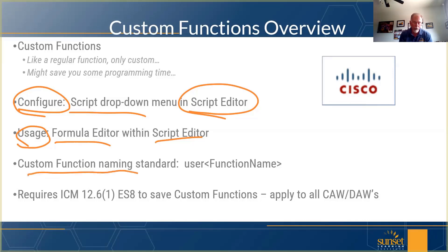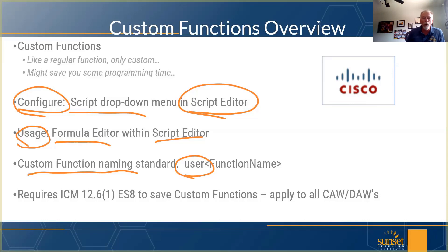Custom function naming standard — similar to ECC variables or user variables in ICM. All custom functions start with the keyword 'user'. That's so you know somebody built them; they didn't come standard with the system. There are no built-in custom functions out of the box. If you're on ICM 12.6, contacts enterprise packaged or CCE, you must apply Engineering Special 8 in order to be able to save your custom functions.